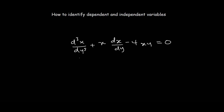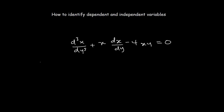With this differential equation, how are we going to identify the dependent and the independent variables? One easy way to identify this is that the dependent variables are always on top, and the independent variables are always on the bottom. We have this derivative here, which is the third derivative of the function x with respect to y.